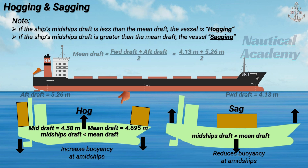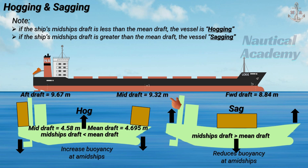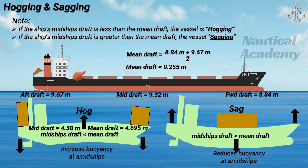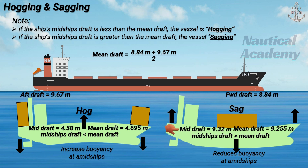Let's have another scenario — we have the ship's forward draft, midships, and aft draft. The ship's mean draft is 9.255 meters. In this case, the midship draft is greater than the mean draft, so the vessel is sagging.